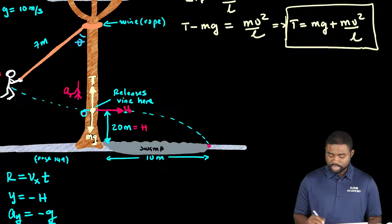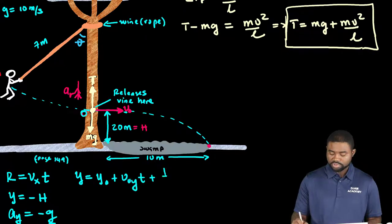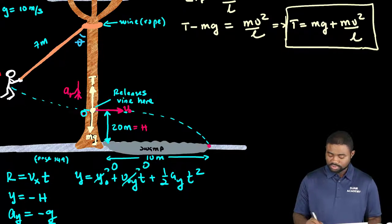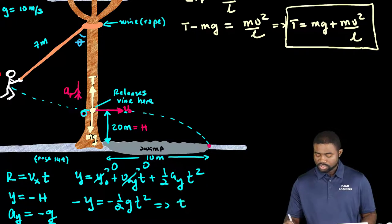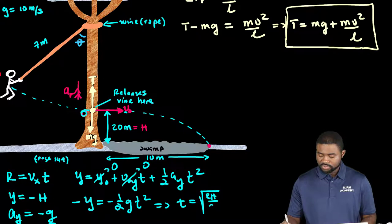What that implies is that y is equal to y naught plus v0y t plus one half ay t squared. This is zero, this is zero. This would mean that negative h is equal to negative one half g t squared. In other words, the time of flight is equal to the square root of 2h all divided by g.